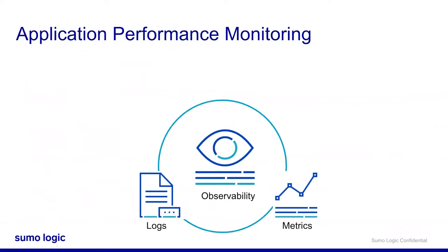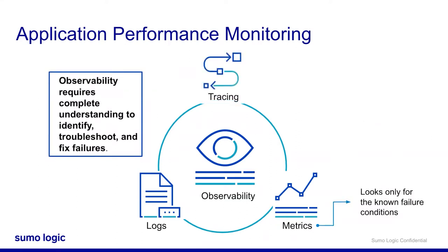Application performance monitoring is an important aspect of observability. Traditionally, metrics have been used for classic monitoring, but they only look for known failure conditions. Observability requires you to completely understand the application so you can identify, troubleshoot, and fix any conditions — known or unknown. Just collecting and analyzing metrics and logs is not enough. We need tracing to give us a better picture and make transaction troubleshooting in distributed microservice environments much easier.